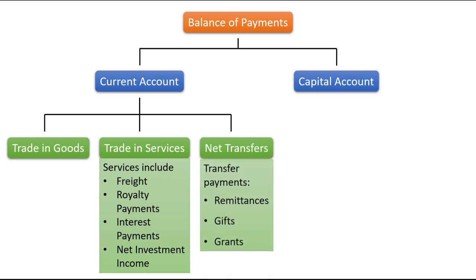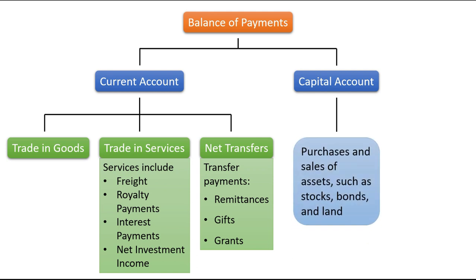Transfer payments include remittances, gifts, and grants. The capital account records the purchases and sales of assets such as stocks, bonds, and land.